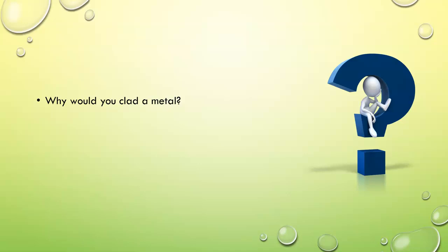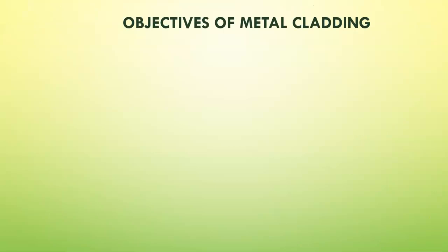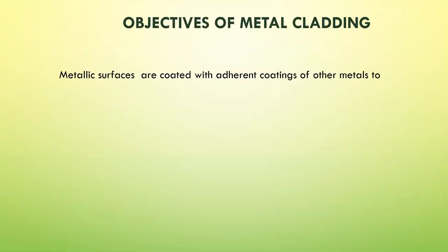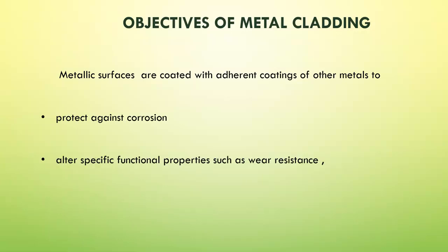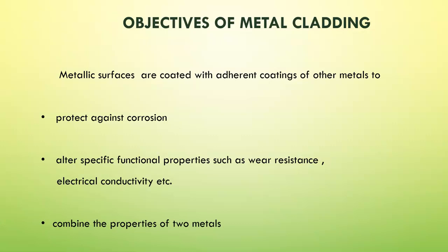Why would you clad a metal? Metallic surfaces are coated with adherent coatings of other metals to protect against corrosion, sometimes to alter specific functional properties such as wear resistance and electrical conductivity, and most of the times to combine the properties of two metals.